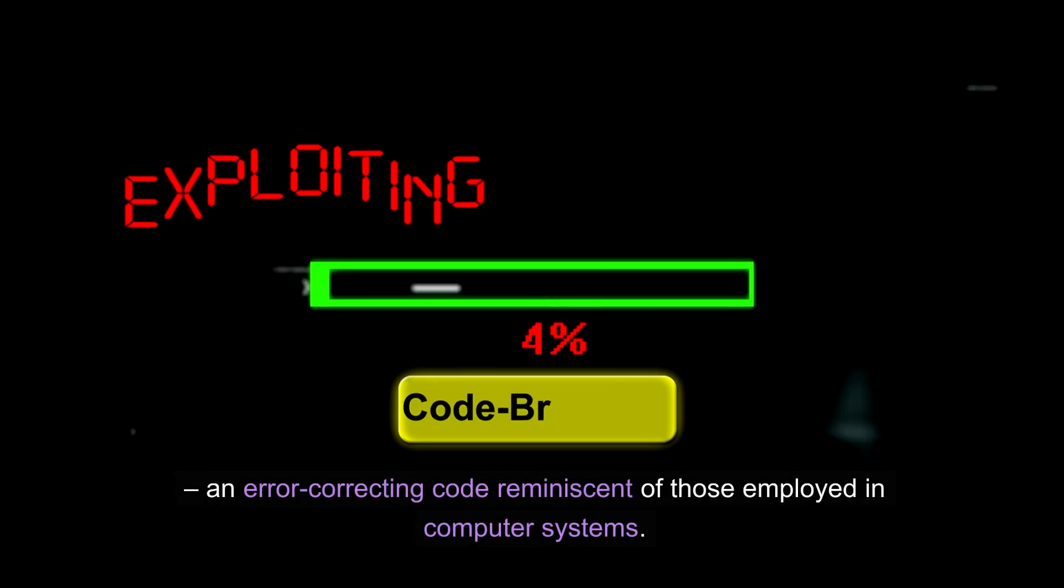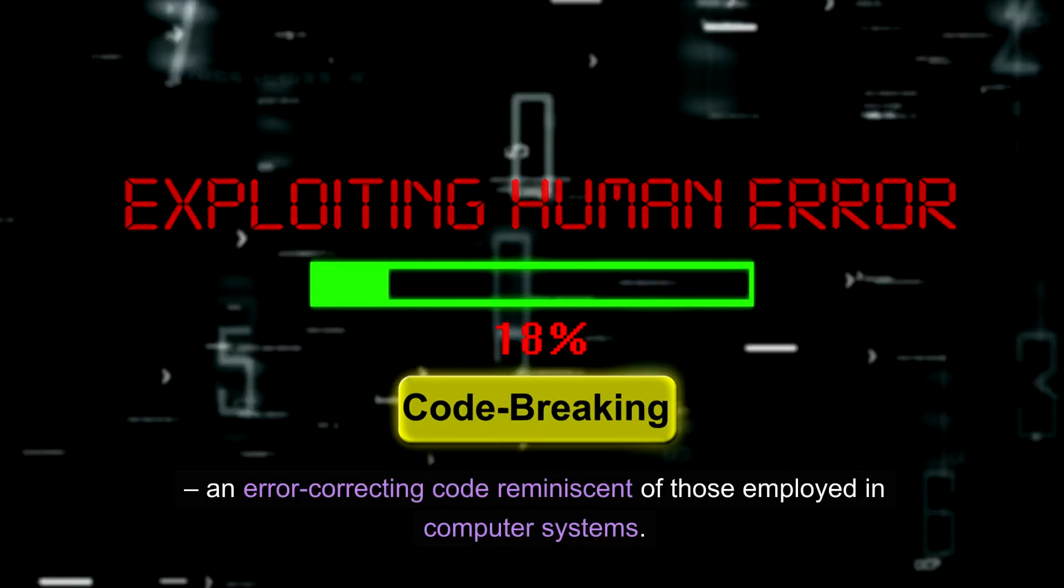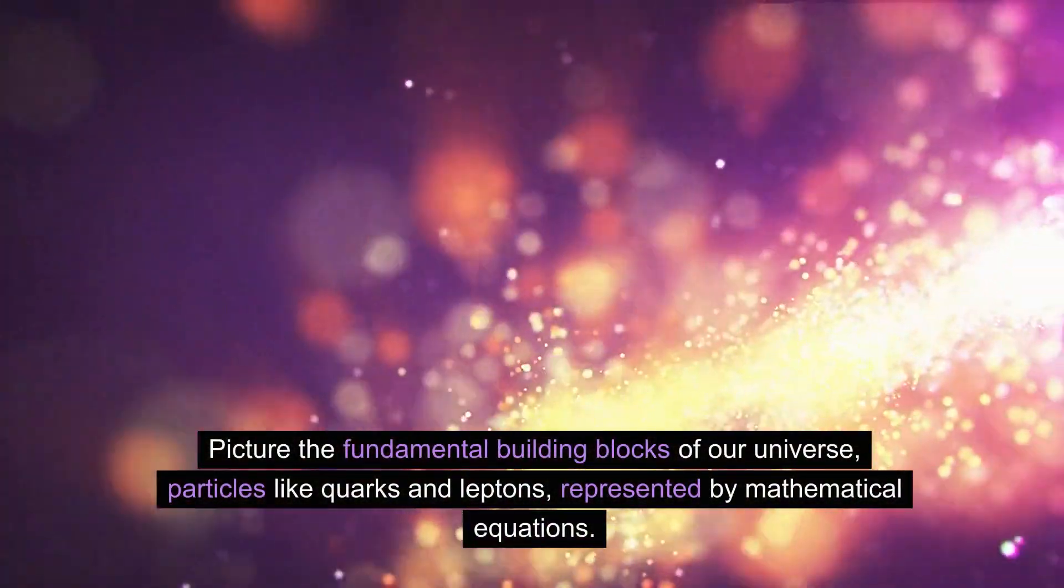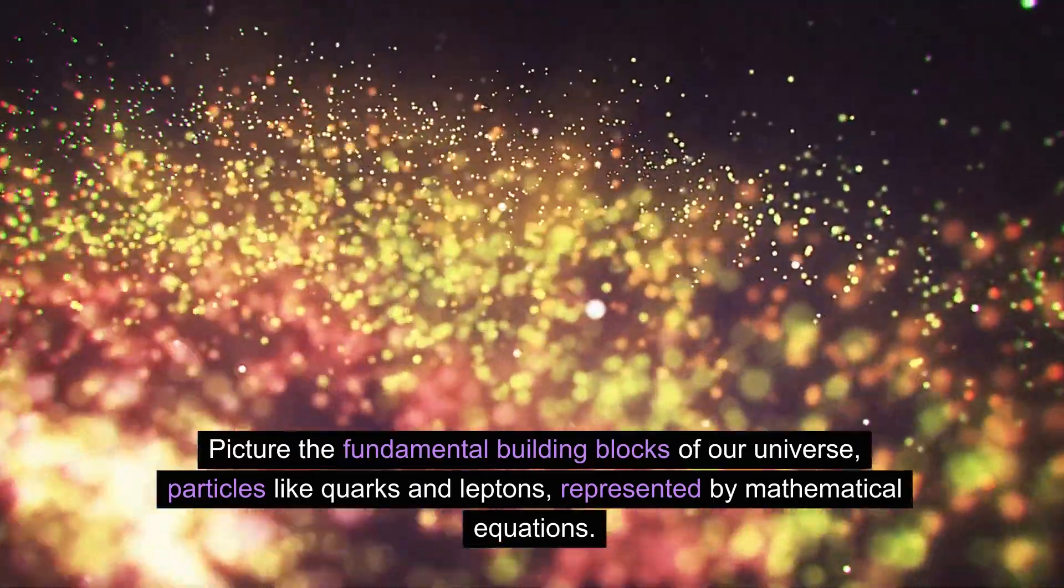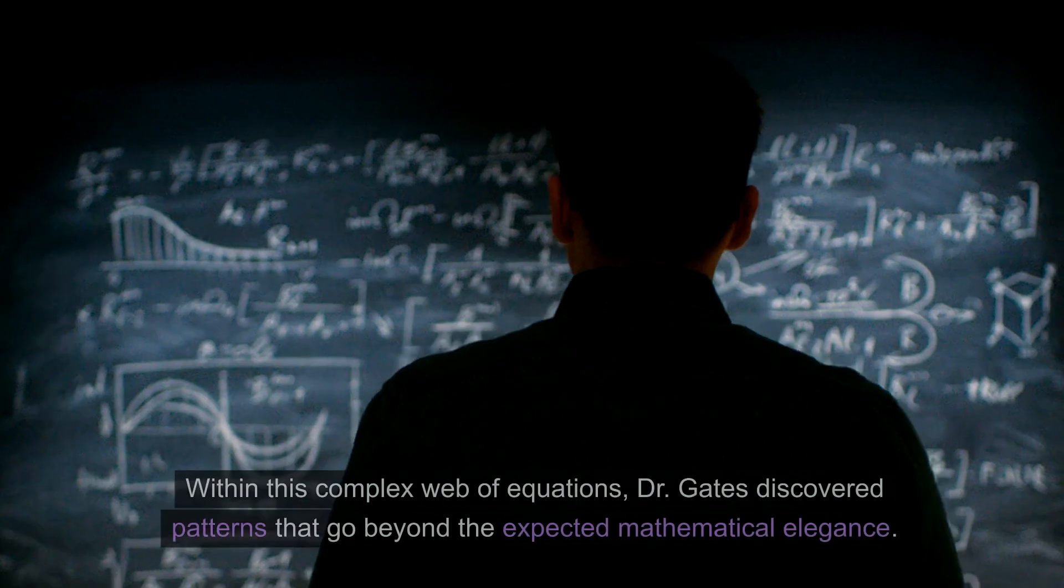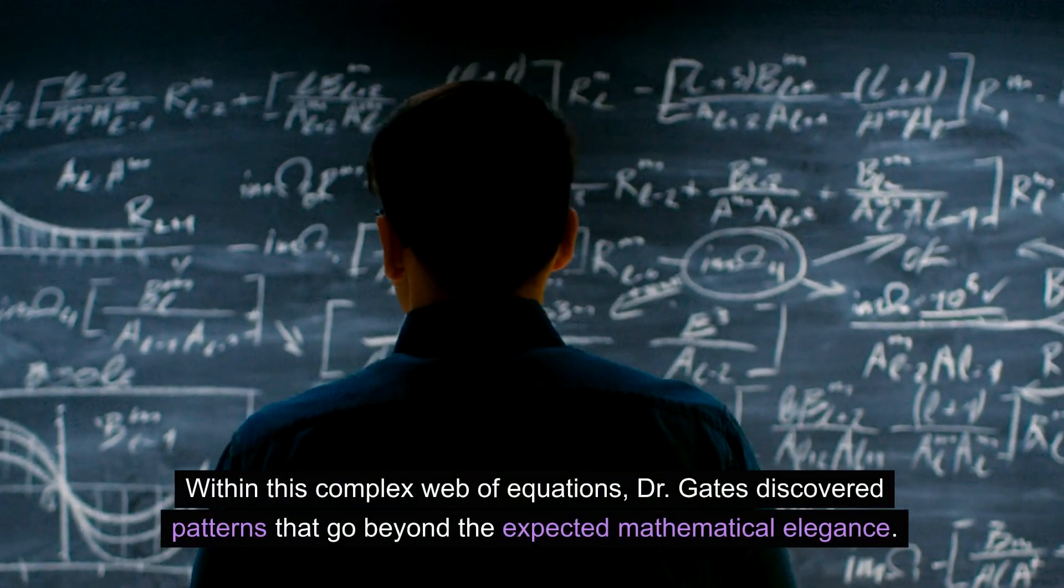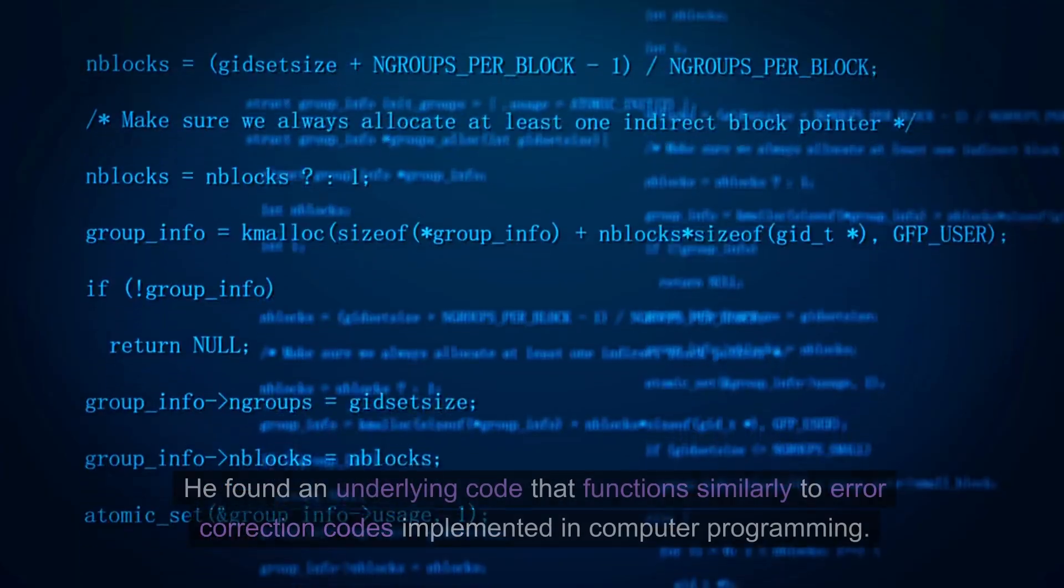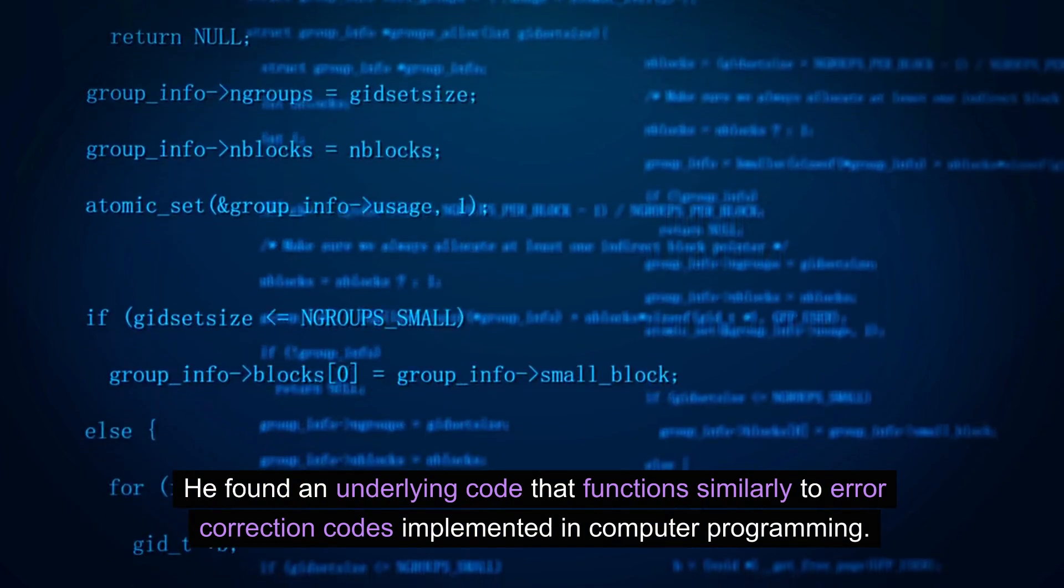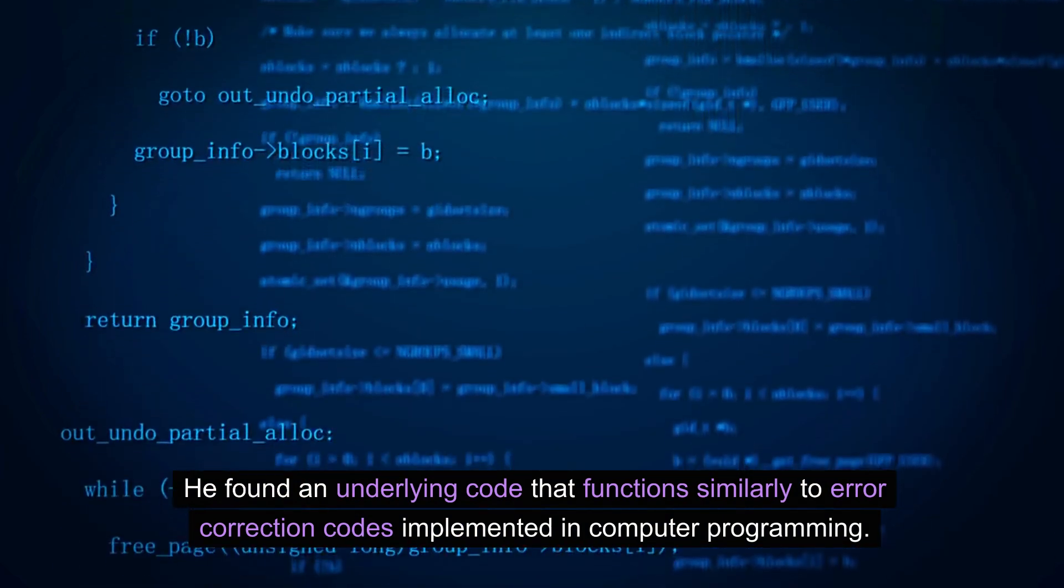An error-correcting code reminiscent of those employed in computer systems. Picture the fundamental building blocks of our universe—particles like quarks and leptons—represented by mathematical equations. Within this complex web of equations, Dr. Gates discovered patterns that go beyond the expected mathematical elegance. He found an underlying code that functions similarly to error correction codes implemented in computer programming.